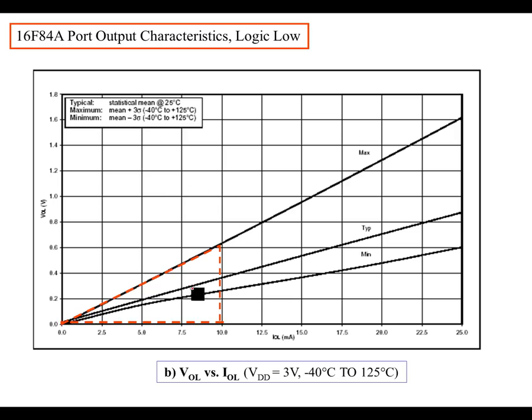As far as the low goes, same thing. The output low value, the value that's going to be defined as low is going to be depending on the current. So if you have zero current, then the VOL, we call it, V output low, is going to be zero volts. But if you have 10 milliamps, then it's going to be 0.6. It can be up to 0.6.